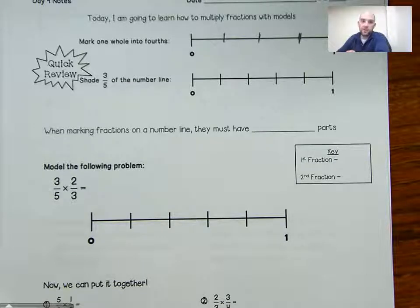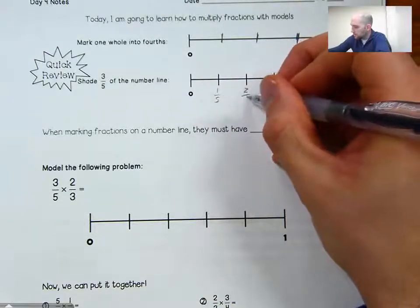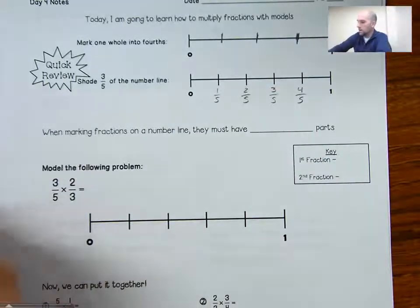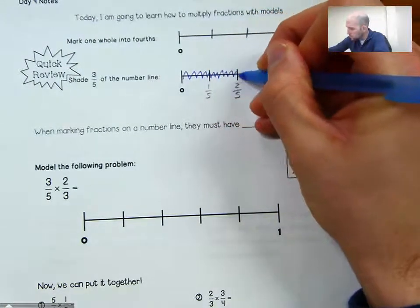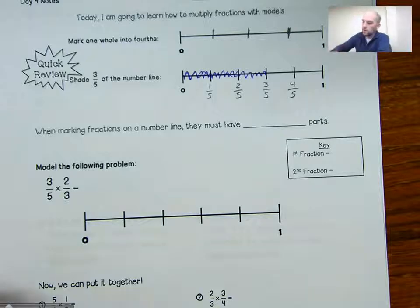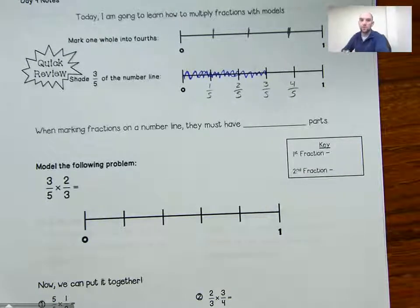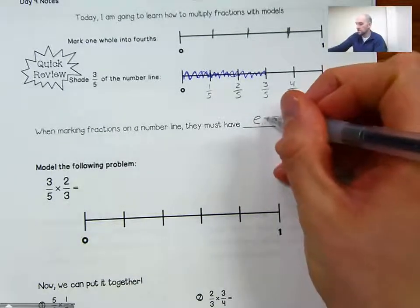Next, we shade three-fifths of the number line. When we have fifths, we have one-fifth, two-fifths, three-fifths, four-fifths, and one whole. I'm going to shade up to three-fifths. We're going to be shading number lines like that today, looking at the overlapped shaded part — similar to what we did in the last lesson. When marking fractions on a number line, they must have equal parts.